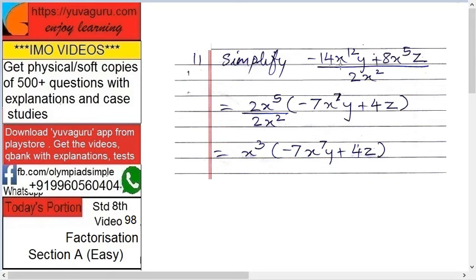Simplify: minus 14x raised to 12 y plus 8x raised to 5 z, the whole divided by 2x square. We take 2 and x raised to 5 as common from the numerator — since 5 is the smaller power between 5 and 12 — giving us 2x raised to 5 upon 2x square, into a bracket.